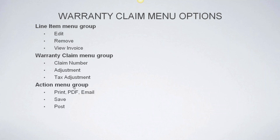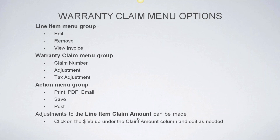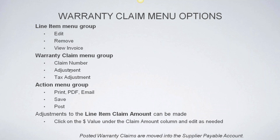Let's go back to the presentation. The line item menu group gives you the ability to edit an individual line item; removing the item moves it from warranty claims back to pending claims, and you can always view the invoice for the customer. The warranty claim menu group gives you the ability to edit the claim number, make a general adjustment, or make a tax adjustment. The action menu group allows you to print, PDF, or email, save any changes, and post the claim. Adjustments to the line item credit can be made by clicking on the dollar value under the claim amount column and editing as needed. Remember: posted warranty claims are moved into the supplier's payable account, which you'll recognize when you do your reconciliation.